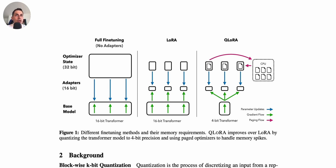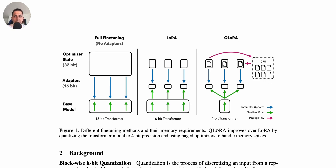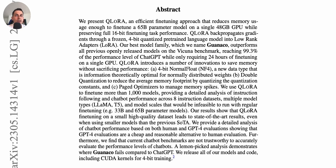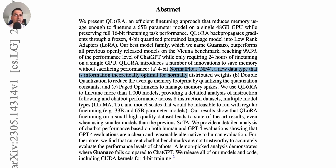The authors introduce three innovations to make QLORA possible. The first innovation is the use of a new data type called 4-bit normal float, which is information-theoretically optimal for normally distributed weights. This is a new quantization method that they show works very well for this use case.